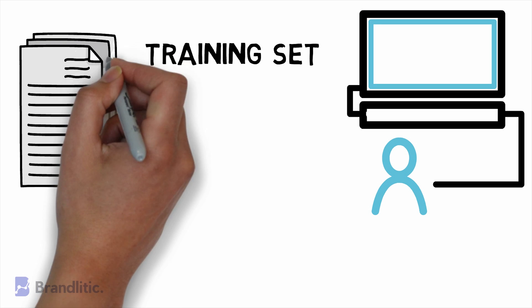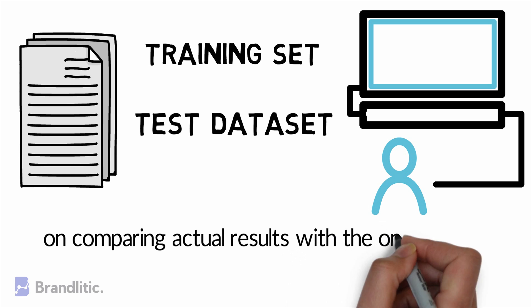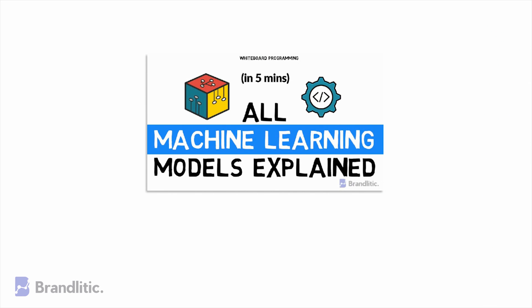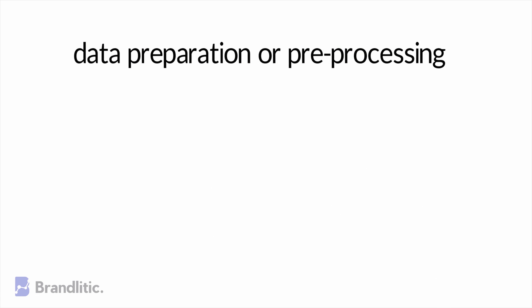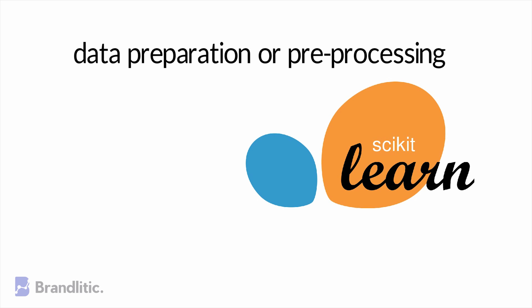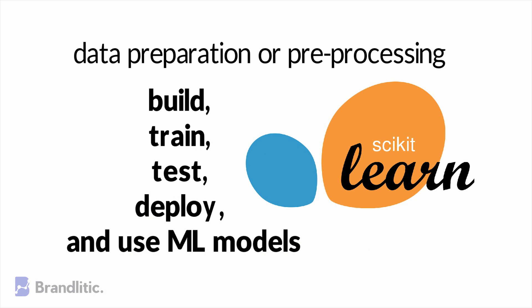Once training is complete, the ML model is tested on data it has not encountered before — this new dataset is called test data. By comparing actual results with those from the model, we gauge how accurately the machine has learned. There are many types of models and algorithms that can be employed, and I've created a short 5-minute video to help you get familiar with the basics — link is in the description below. Do note that there are a lot of data preparation and pre-processing steps needed before training your model. But ML libraries like scikit-learn have evolved so much that even an app developer without a background in mathematics or statistics can start using these libraries to build, train, test, deploy, and use machine learning models in the real world. It's always helpful, though, to know how these algorithms work so you can make informed decisions when selecting an algorithm for your problem.